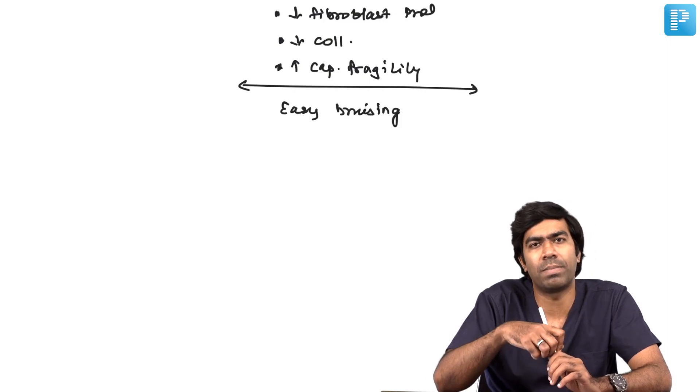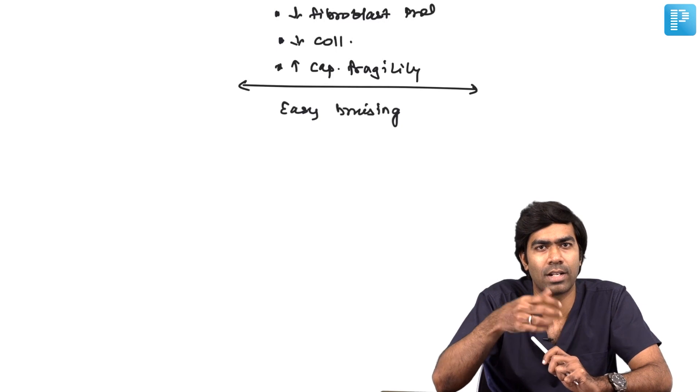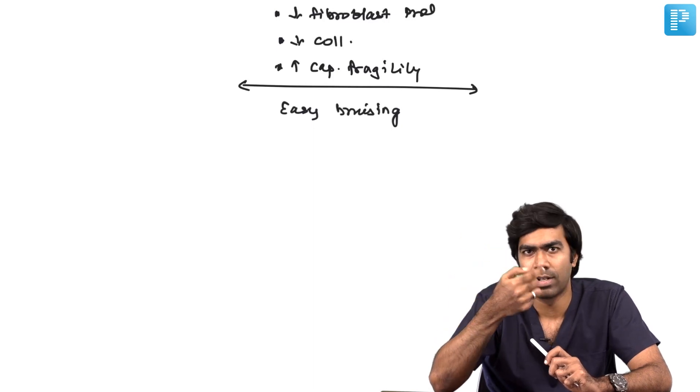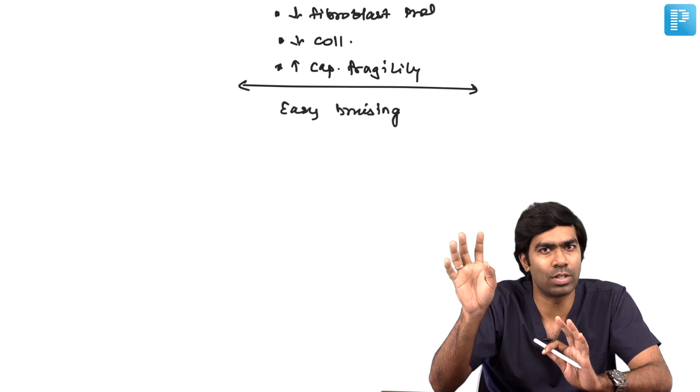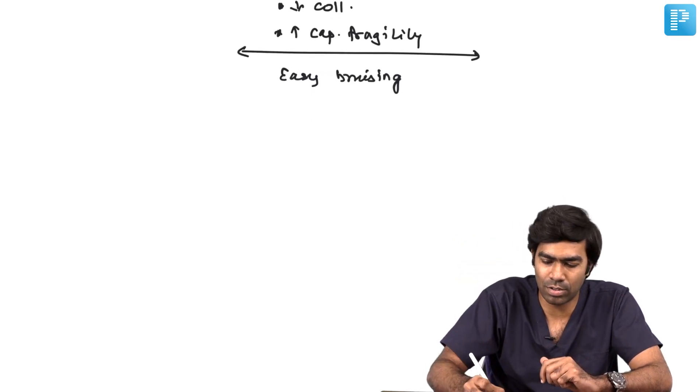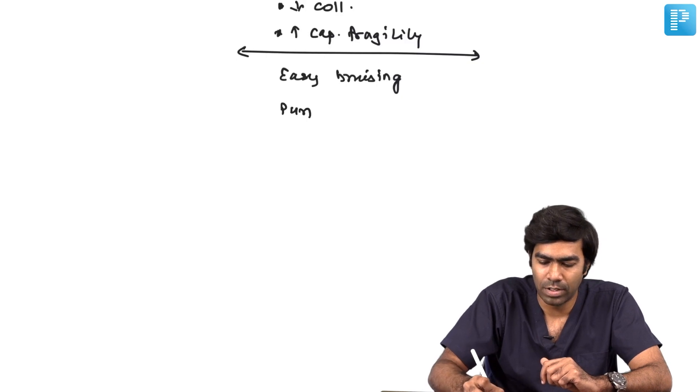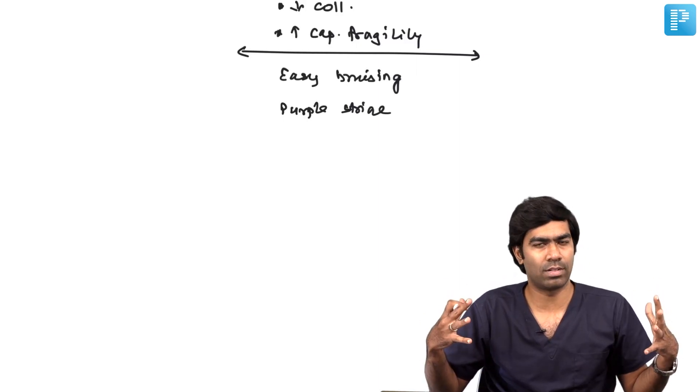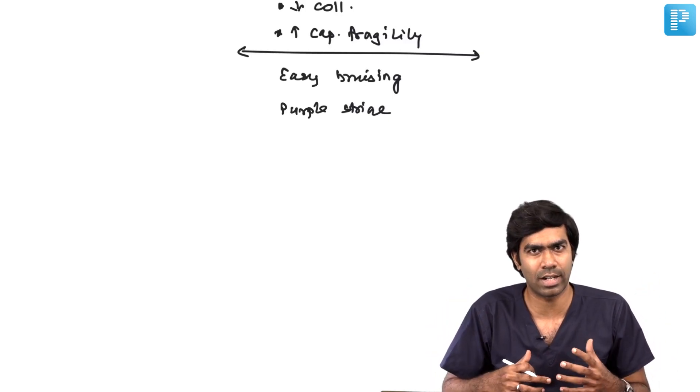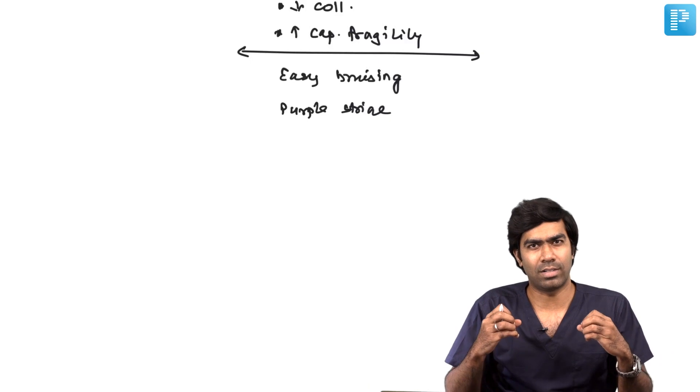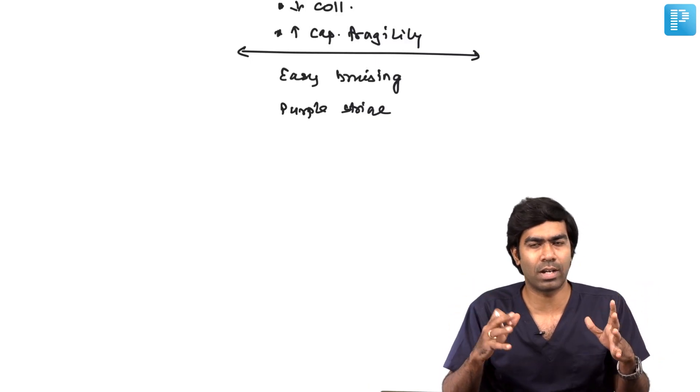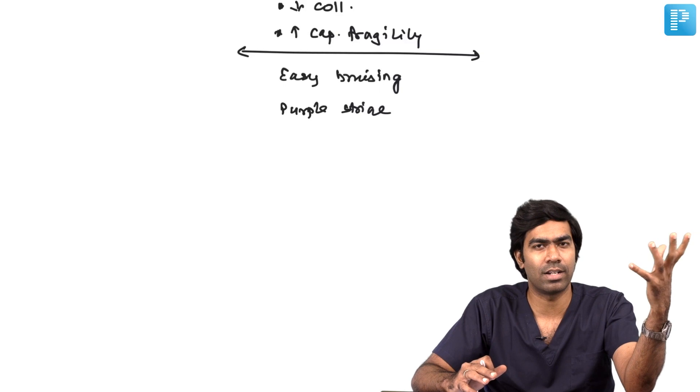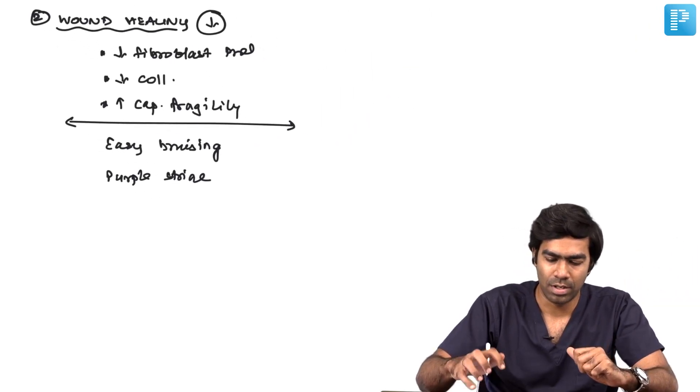This easy bruising can happen in patients using inappropriate inhaler technique - hitting everything in the mouth and swallowing it, resulting in absorption of glucocorticoids and easy bruising in elderly patients. This is also the main reason you get purple striae. In Cushing syndrome, there is sudden expansion of central fat and stretching of skin, causing capillary expansion and breakage with blood leakage, resulting in purple striae characteristic of Cushing's syndrome.